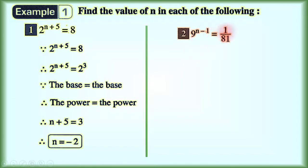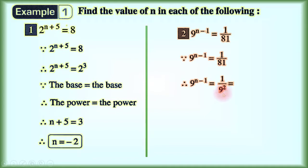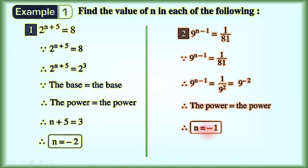Number 2: 9 power (n minus 1) equals 1 over 81. We can write 81 as 9 power 2. Therefore 9 power (n minus 1) equals 1 over 9 power 2. We can move 9 power 2 from the denominator to the numerator and change the sign of the power, giving 9 power negative 2. Now we have the same base: 9 power (n minus 1) equals 9 power negative 2. Because the bases are equal, the powers are equal, so n minus 1 equals negative 2, therefore n equals negative 1.